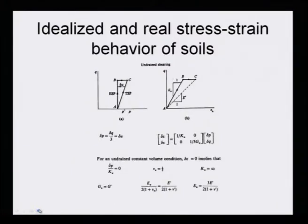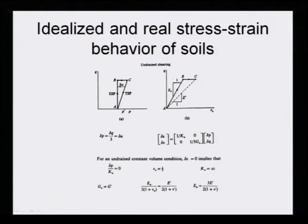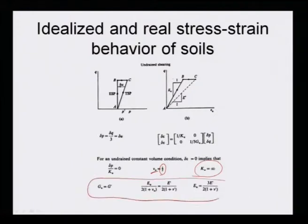Regarding idealized and real stress-strain behavior of soil, this is part of the modeling discussion. For undrained constant-volume conditions, delta_volume = 0 implies delta_P / K_U = 0, so Poisson's ratio at undrained conditions mu = 0.5, K_U = infinity, and G_U = G_prime.